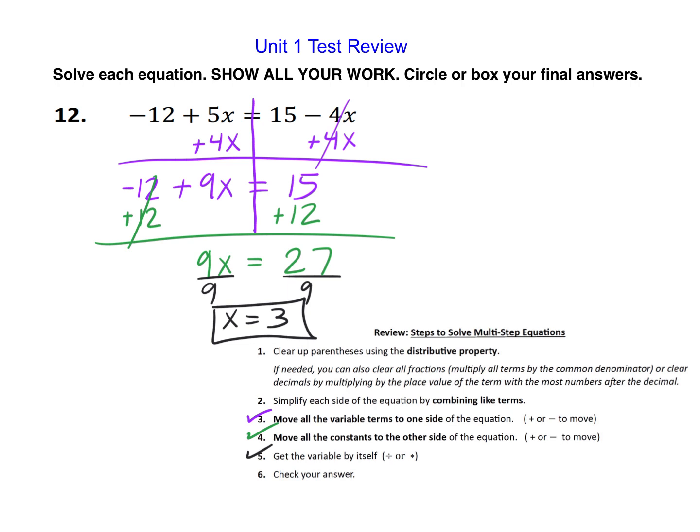We can always double check our answer if we want to. The check is optional, but it's a good idea. If you decide to do the check, just go back to the original equation and replace the variable with the answer you got. I got 3 for x, so I'm going to put a 3 here and a 3 there. I always put my variable in parentheses. Then I can type this into my calculator, or if I do it by hand, that's negative 12 plus 15, and on this side it'd be 15 minus 12. That's negative 12 plus 15 is 3, and 15 minus 12 is 3. So 3 equals 3 passes our check, meaning we got the answer right.